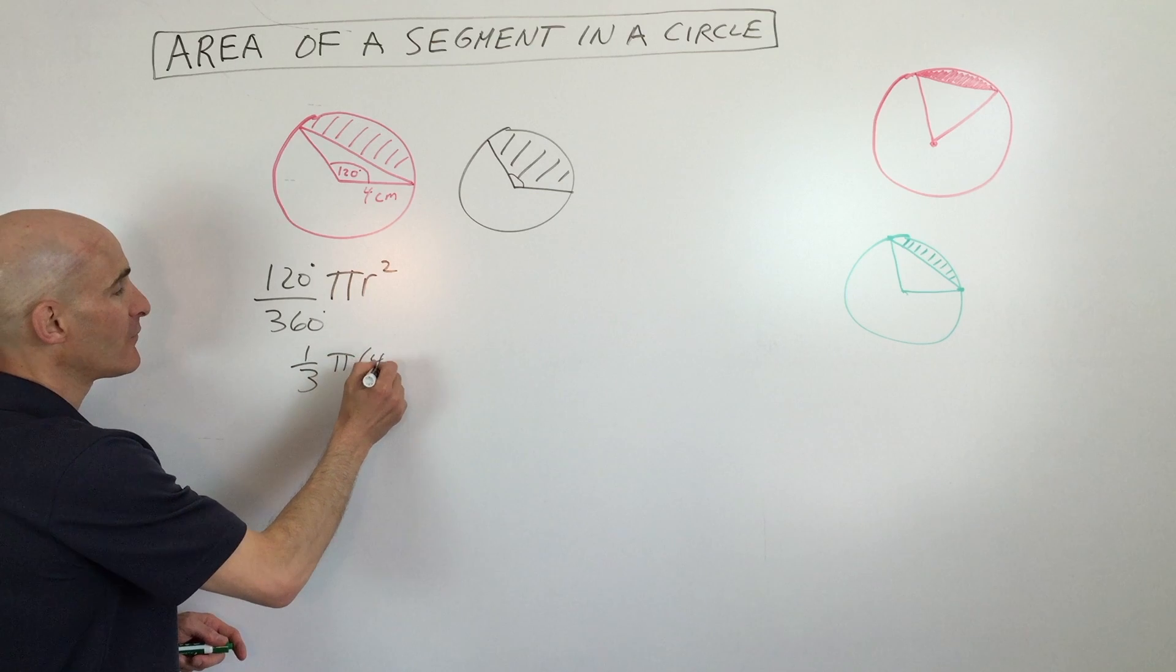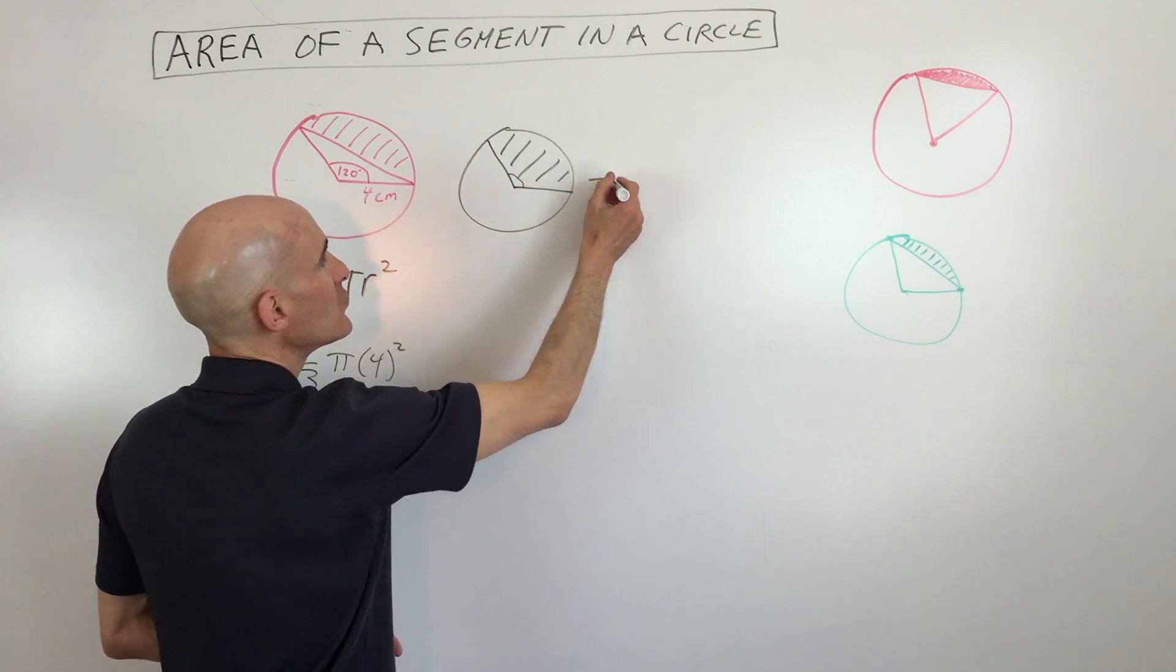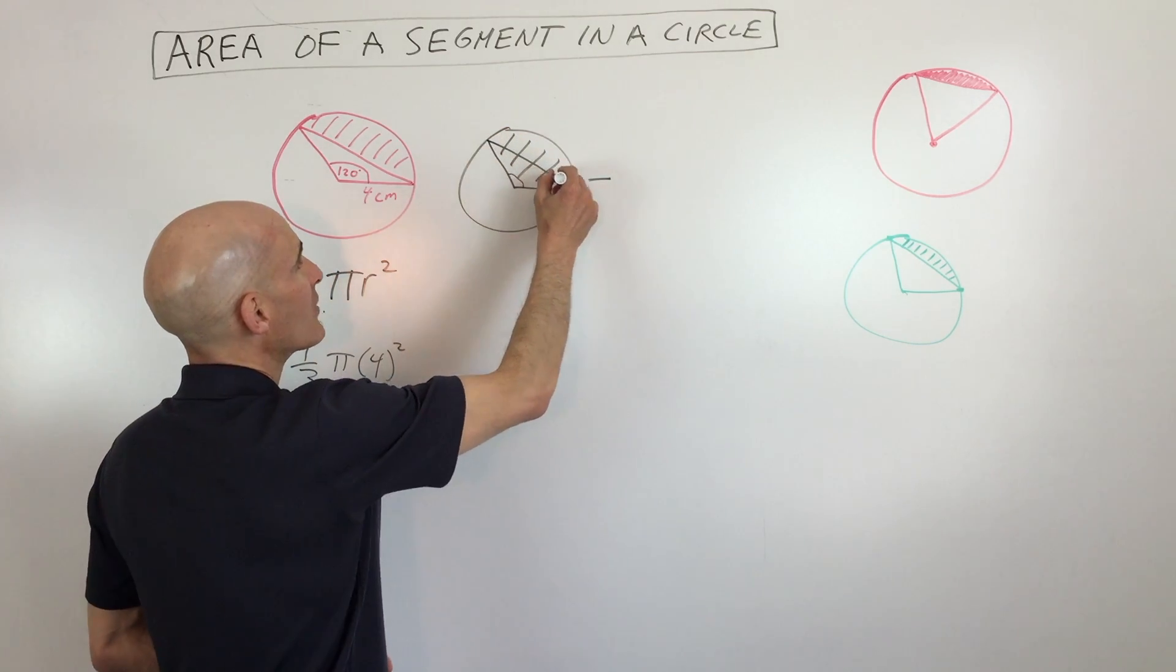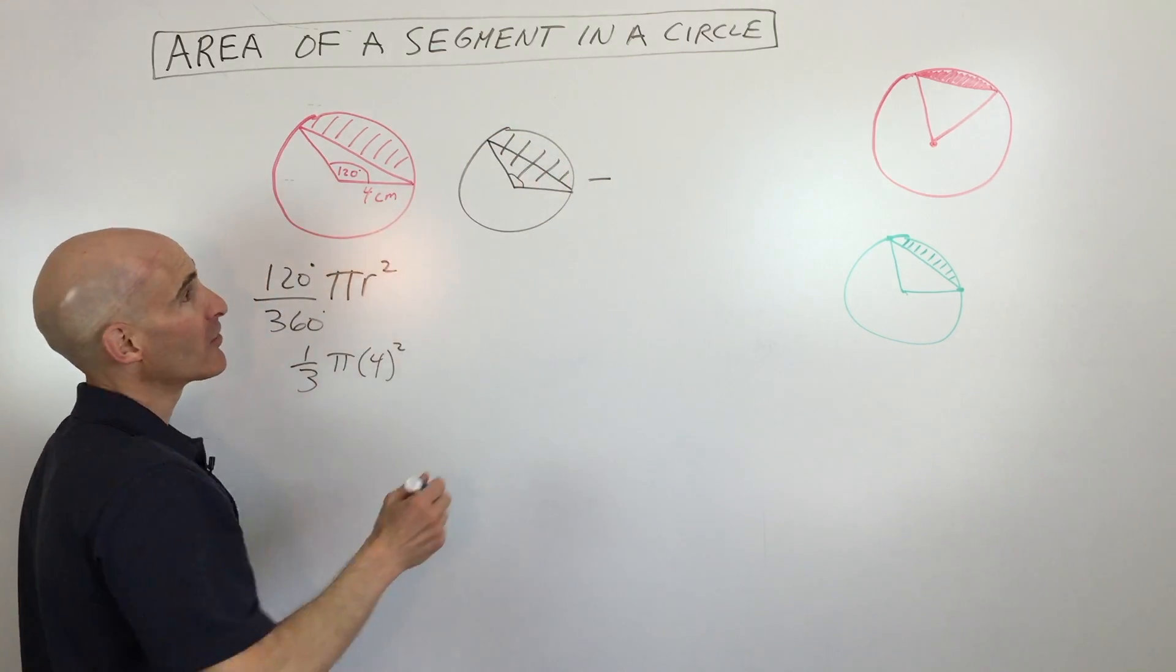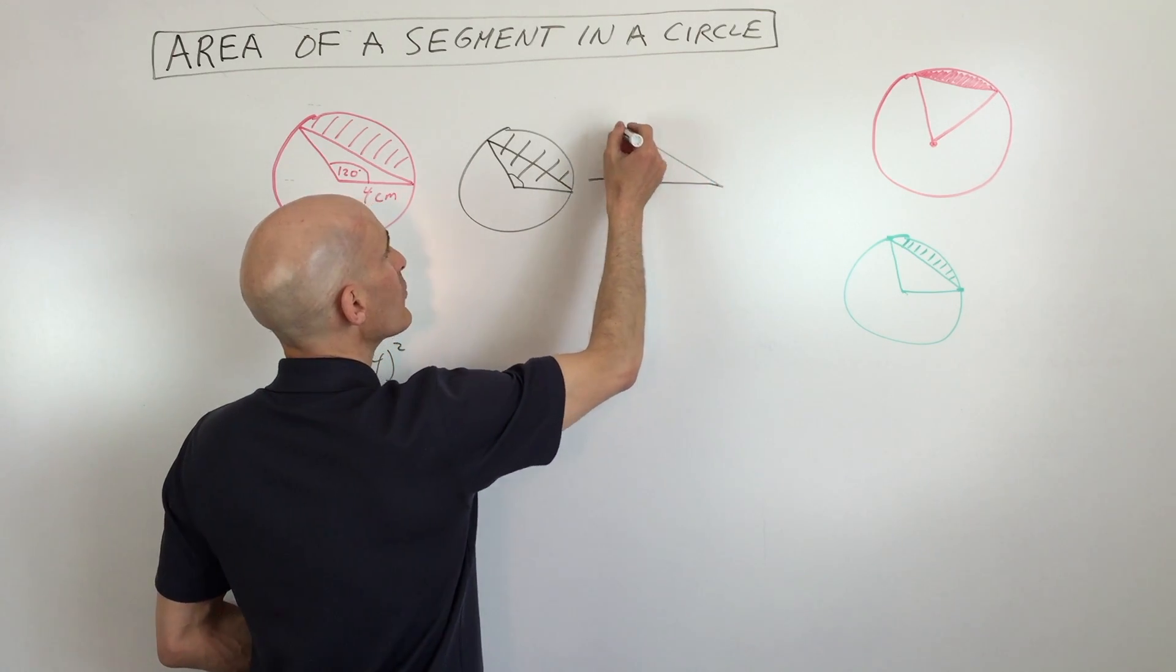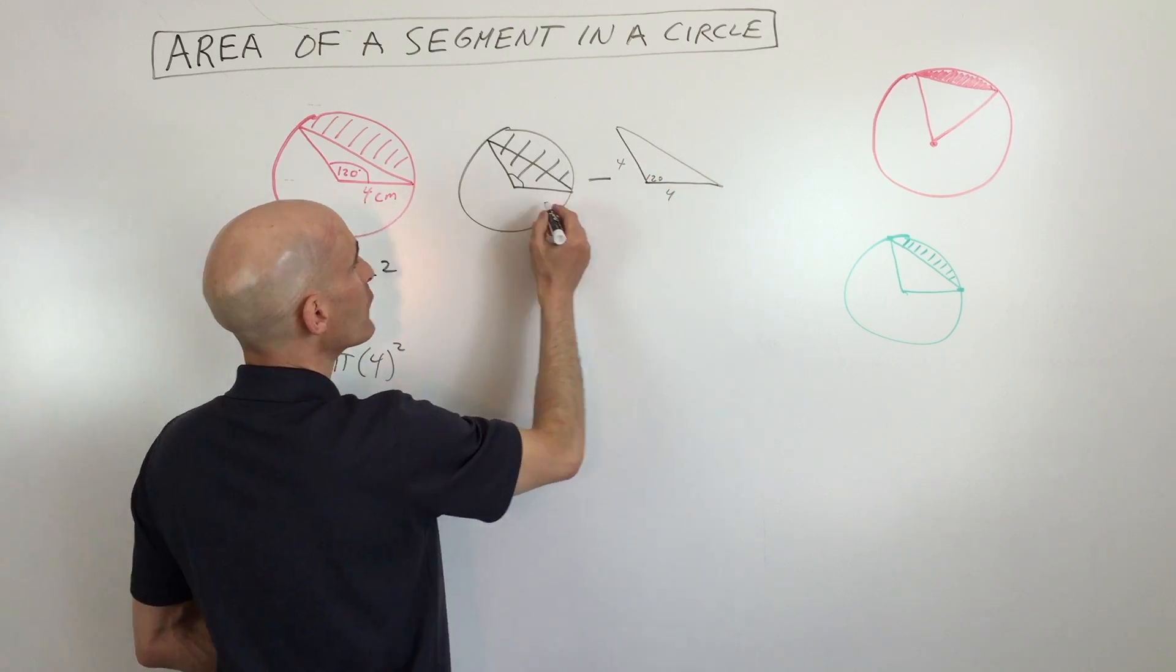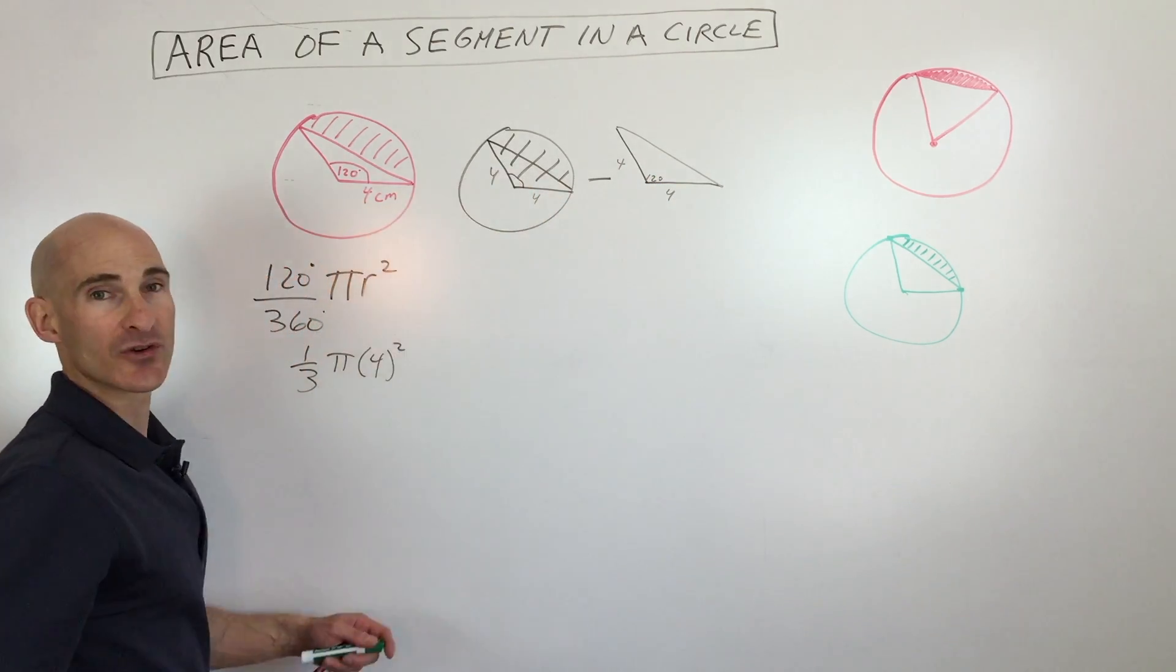Times pi, 4 squared. So that's this area here. Now what we want to do is we want to subtract off this triangle right here. If we look at that triangle, let's look at what we have. We have 120 degrees, this is 4 and this is 4, because these are both the radii of the circle.